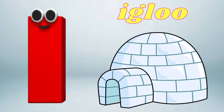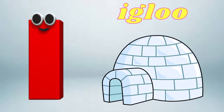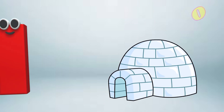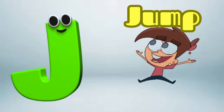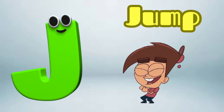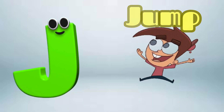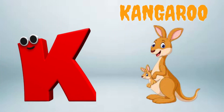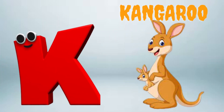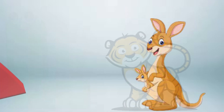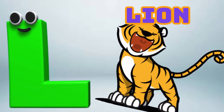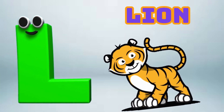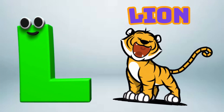I is for Igloo, I-I-Igloo. J is for Jump, J-J-Jump. K is for Kangaroo, K-K-Kangaroo. L is for Lion, L-L-Lion.